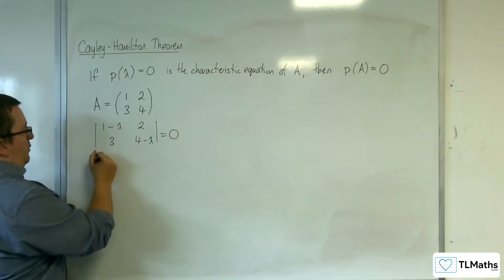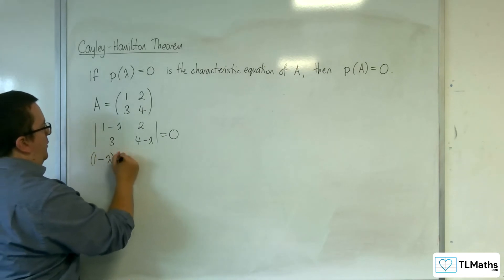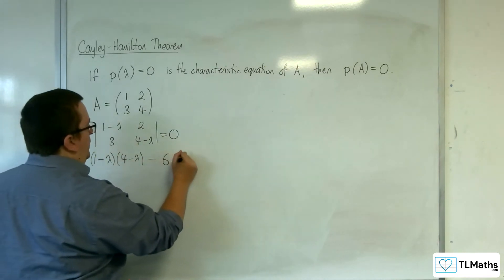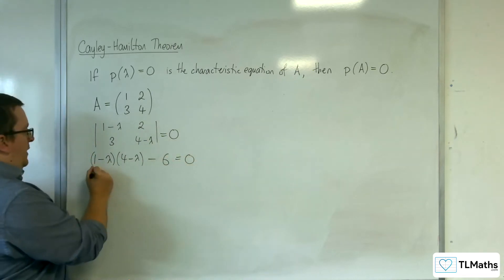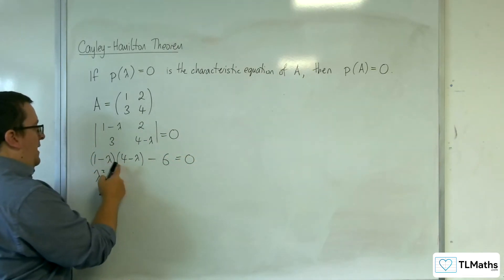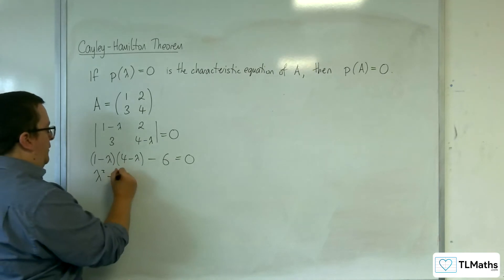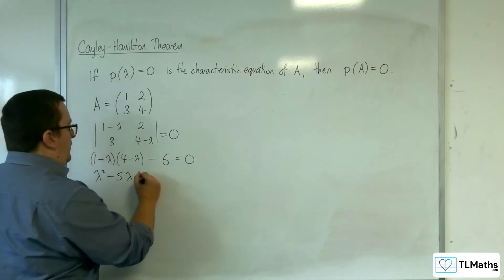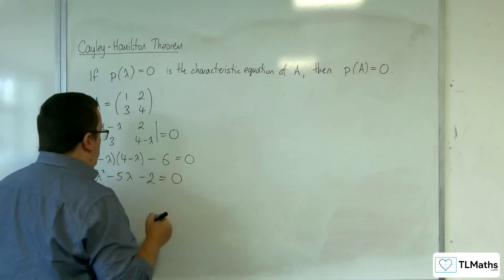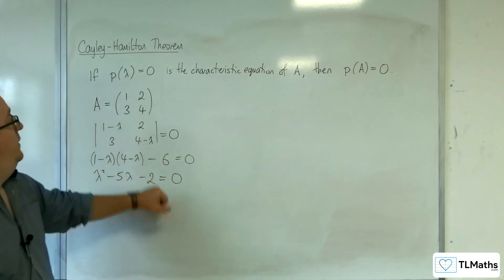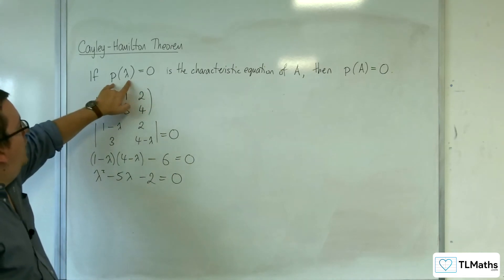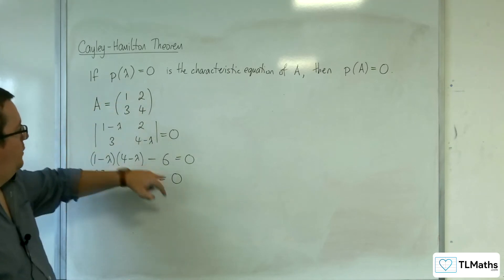So we're going to multiply that out. 1 take away lambda times 4 take away lambda, take away 2 times 3, so 6 equals 0. So we're going to get lambda squared. We're going to get minus 4 lambda and minus lambda, so minus 5 lambda. We're going to get 1 times 4, so 4 take away 6 is minus 2 equals 0. That is that. This is a polynomial function of lambda equal to 0. That's our characteristic equation.